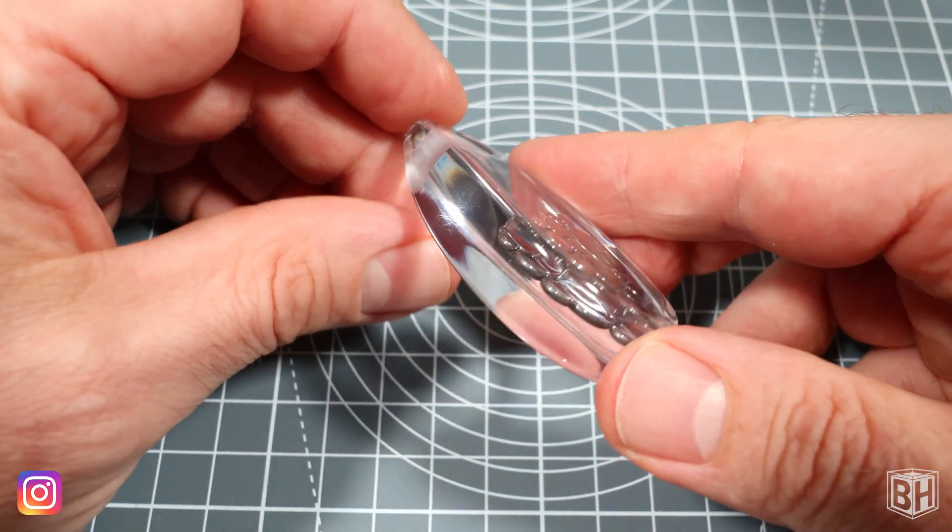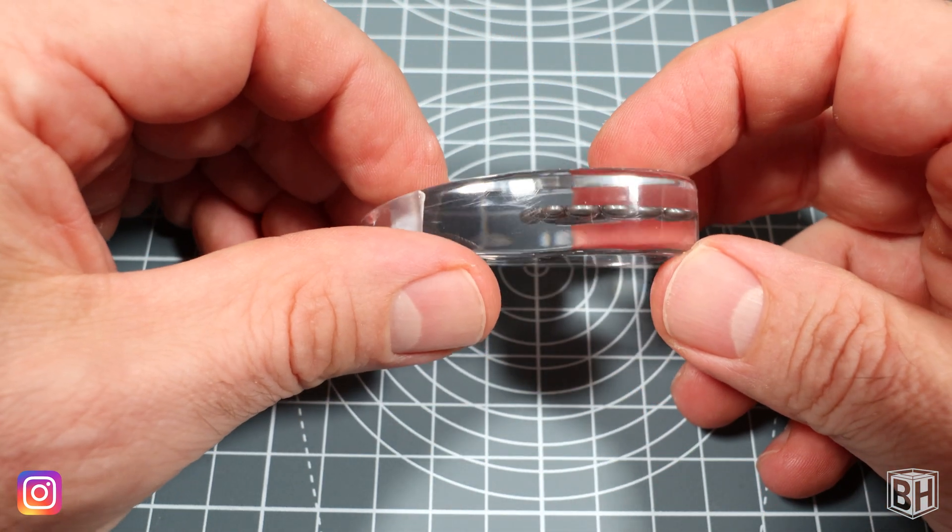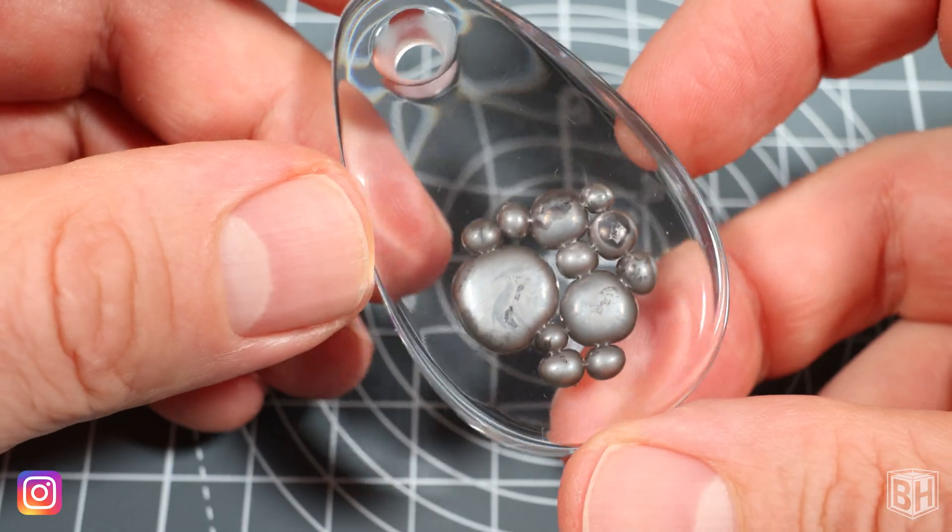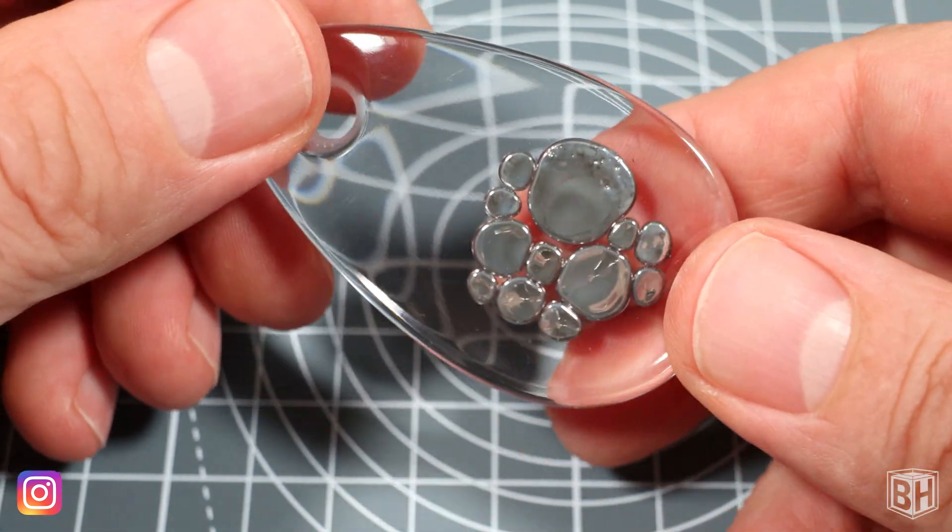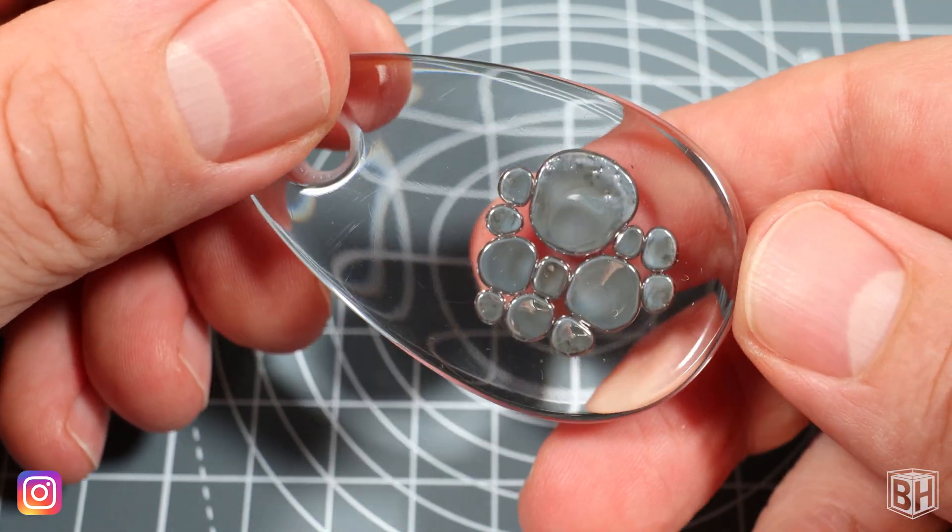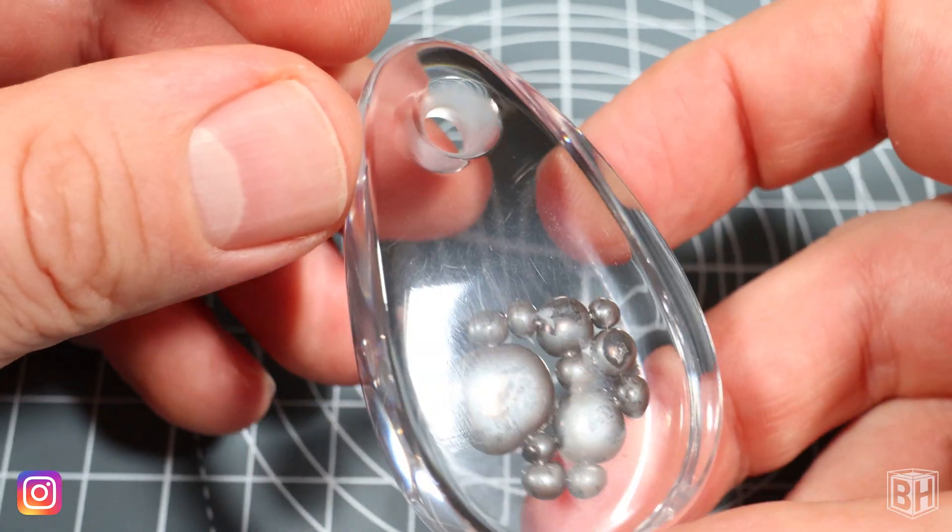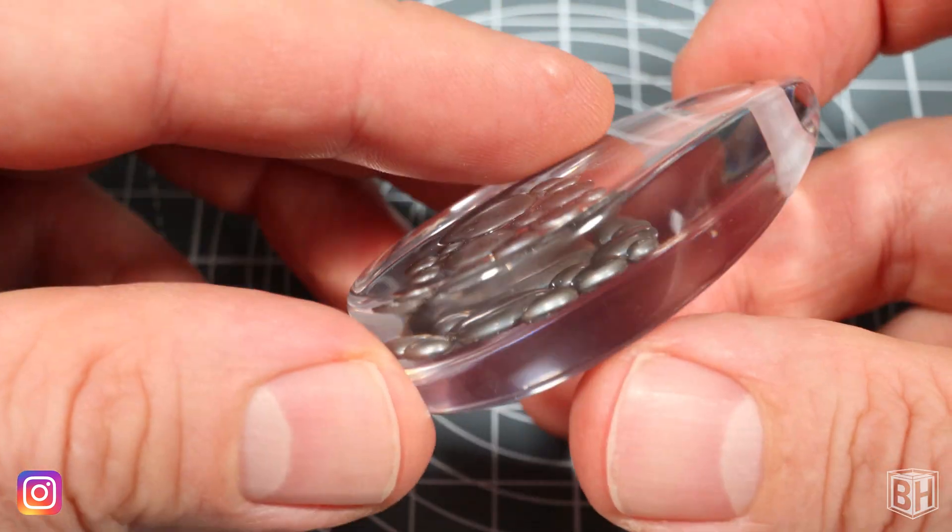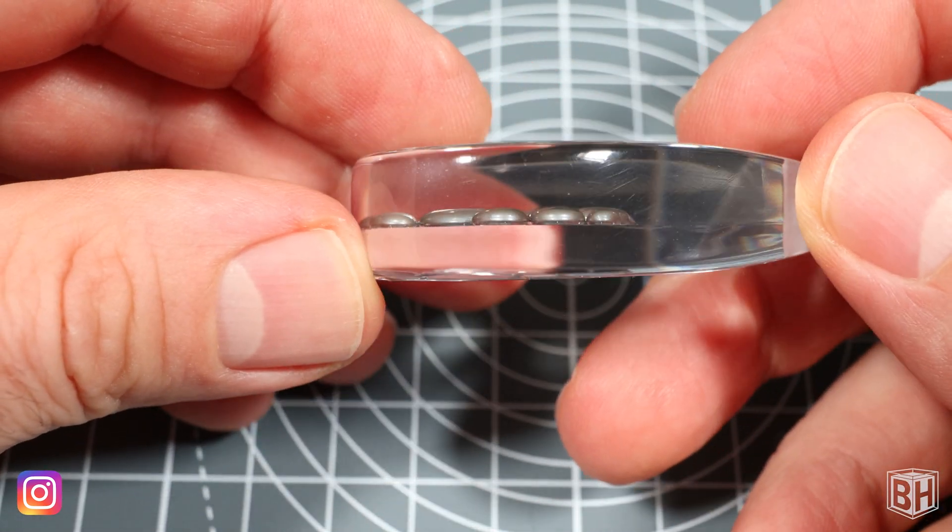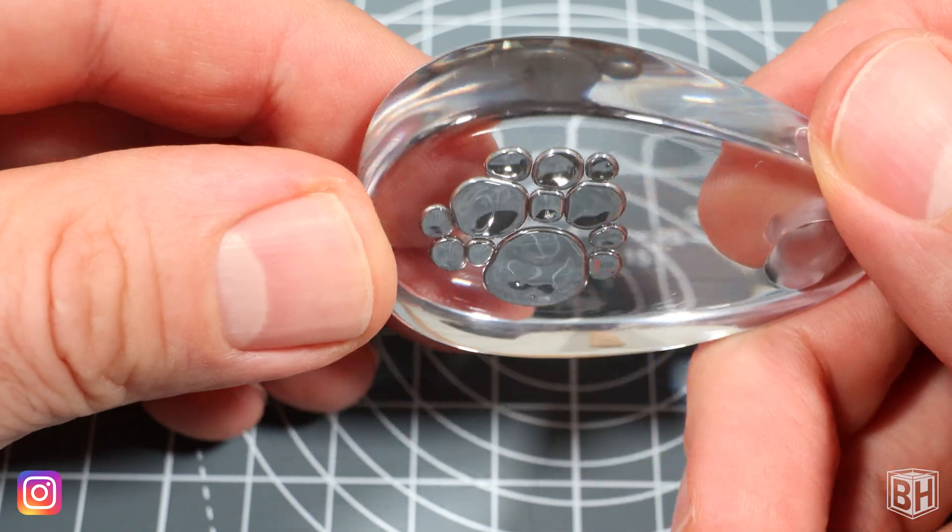My only concern though is its practical use when considering the expansion of the mercury. As you probably know, mercury is used in thermometers due to its expansion during temperature changes. And so if the mercury expands too much, it could crack the resin and leak out, which being toxic is not good. I guess I'll have to put it somewhere hot and see what happens.